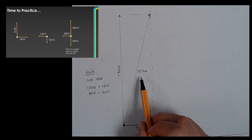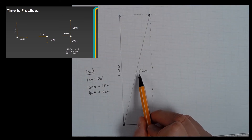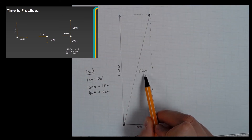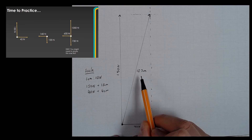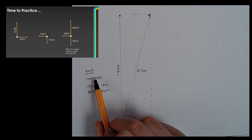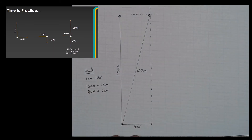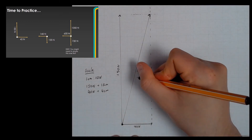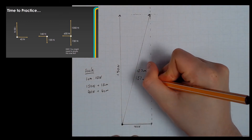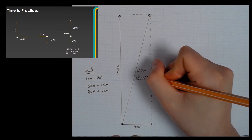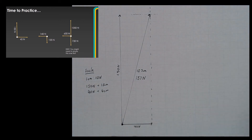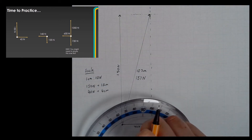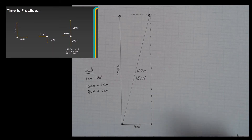That doesn't tell me the size of the force — that tells me the length of my line. To work out the size of the force I'm going to need to use my scale: every centimetre is 10 newtons, which is a nice and easy scale to work with. So that's 157 newtons of force.